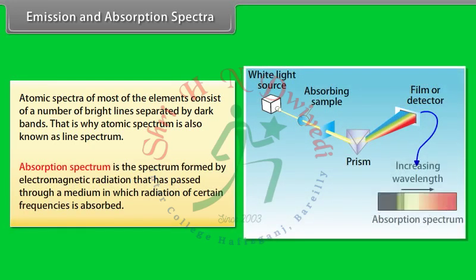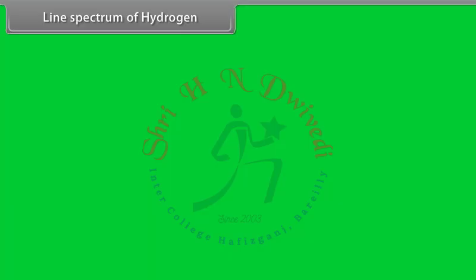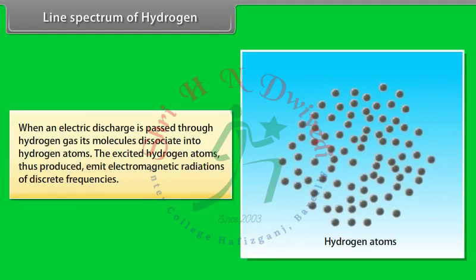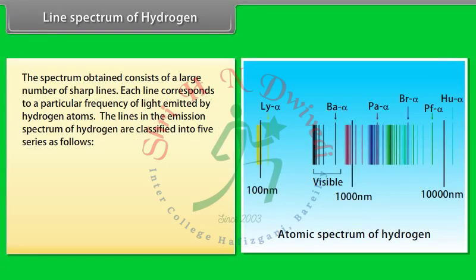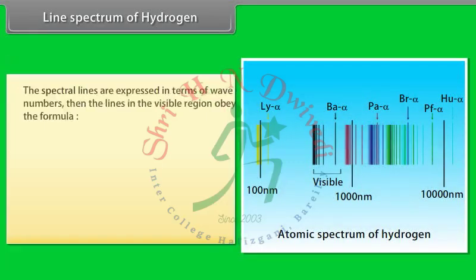Absorption spectrum is the spectrum formed by electromagnetic radiation that has passed through a medium in which radiation of certain frequencies is absorbed. Line spectrum of hydrogen: When an electric discharge is passed through hydrogen gas, its molecules dissociate into hydrogen atoms. The excited hydrogen atoms emit electromagnetic radiations of discrete frequencies, producing a large number of sharp lines. The lines in the emission spectrum of hydrogen are classified into five series: Lyman series (ultraviolet region), Balmer series (visible region), Paschen series, Brackett series, and Pfund series (infrared region).